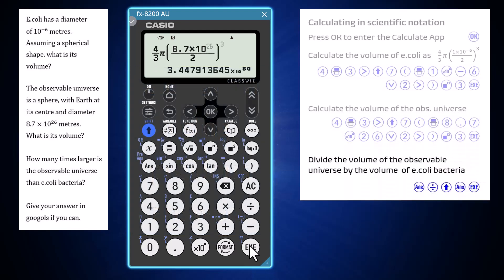One way to do this is to divide the last answer by the one before. This can be done on the 8200 by entering answer divided by pre-answer, where pre-answer is entered via shift and the answer key.